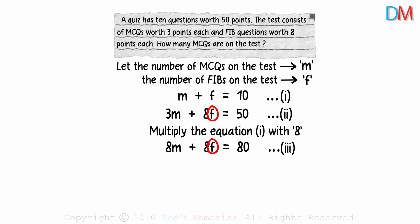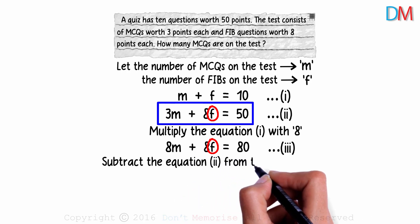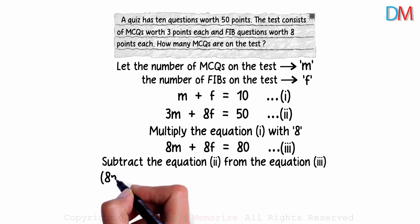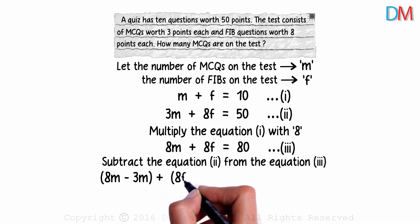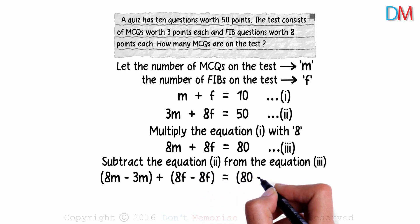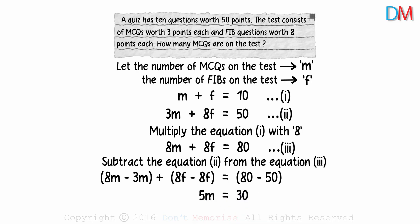To eliminate F, we can subtract the second equation from the third one. 8M minus 3M plus 8F minus 8F equals 80 minus 50. We get 5M as 30 and that gives us the value of M as 6.